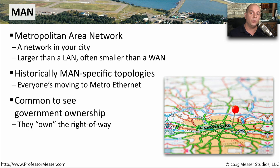We also see more governments taking advantage of metropolitan area networks. Since the government has the right of way to put whatever they would like into the ground, it's very common for them to run conduit, run their own fiber, and have their own metropolitan area network.